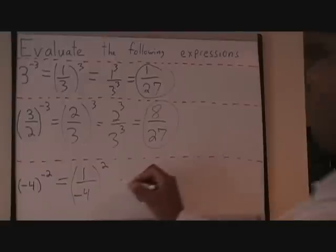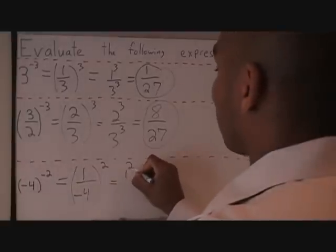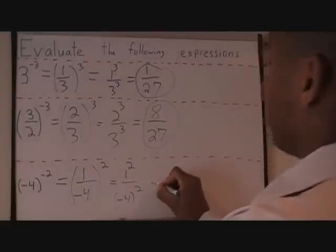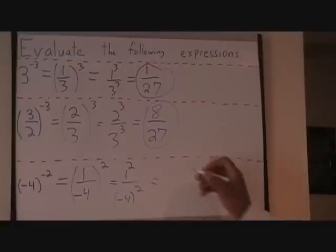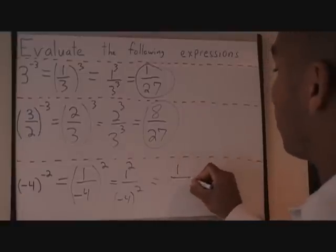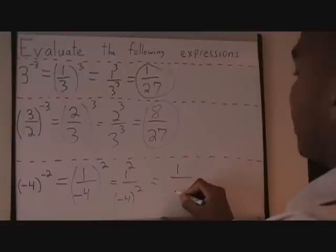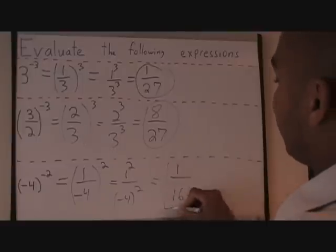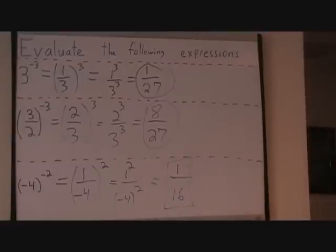I'm left with 1 squared over negative 4 squared. This becomes 1 times 1, which is 1, and negative 4 times negative 4 is positive 16. That's my final answer.